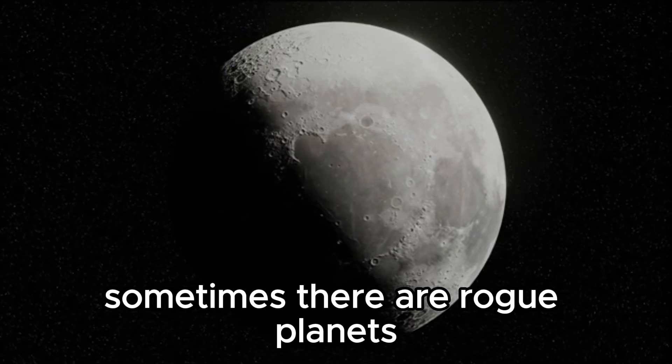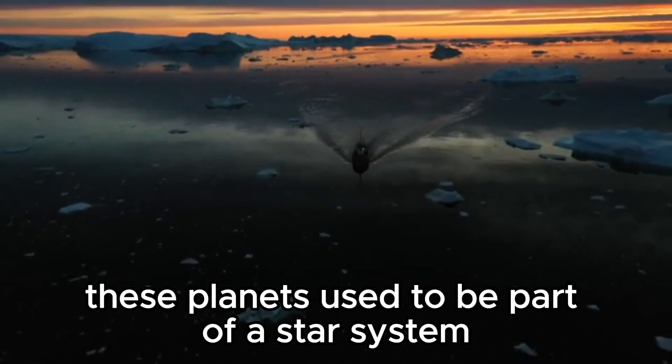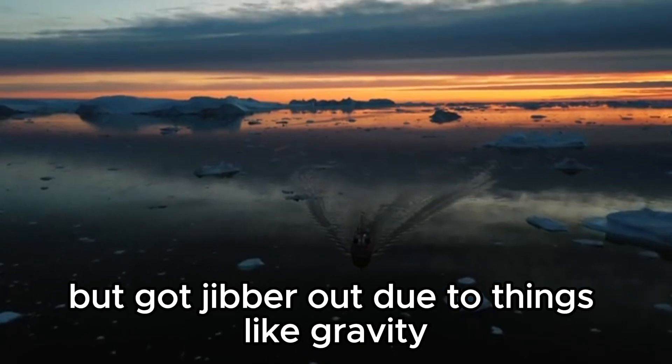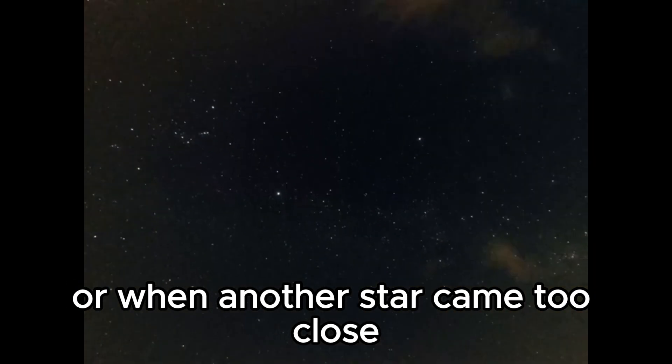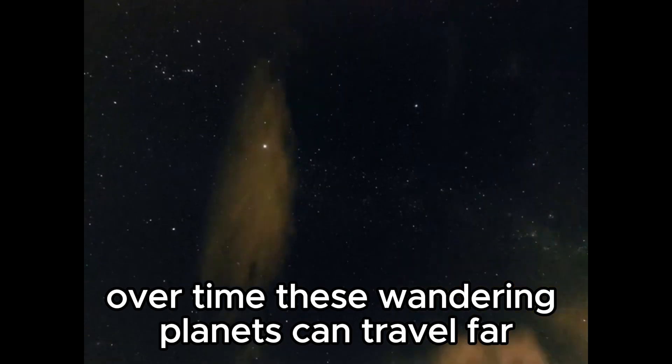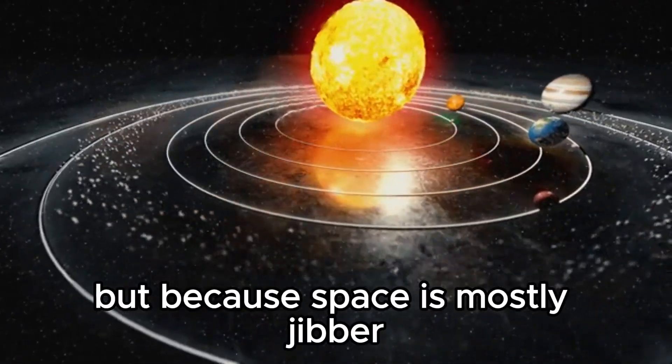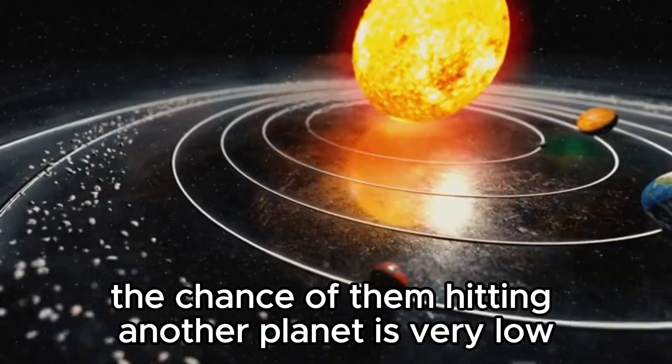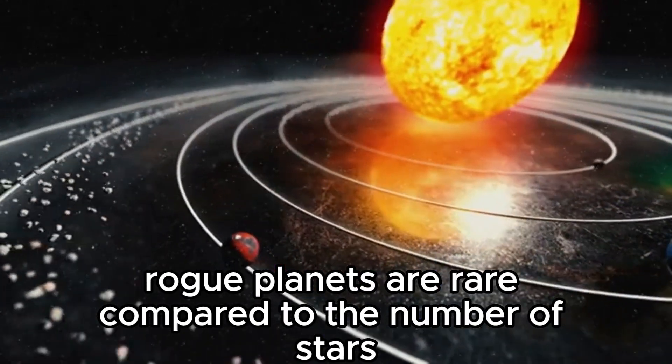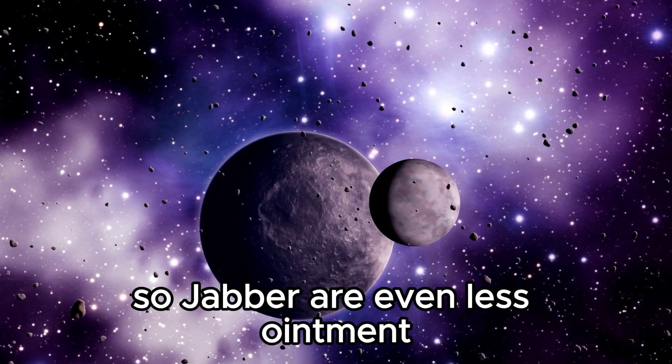Sometimes, there are rogue planets, which don't orbit a star and float around unpredictably. These planets used to be part of a star system, but got kicked out due to things like gravity or when another star came too close. Over time, these wandering planets can travel far and might run into other star systems, but because space is mostly empty, the chance of them hitting another planet is very low. Rogue planets are rare compared to the number of stars and planets with stable orbits, so collisions are even less likely.